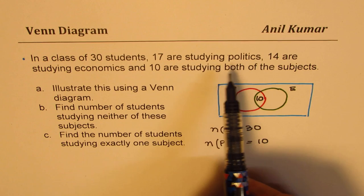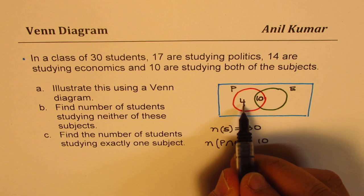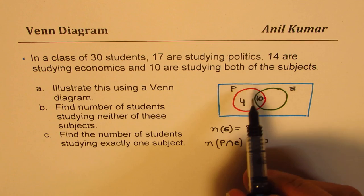10 we have already taken here, right? So those who are studying only politics should be how many? Should be 4, right? Then only you get 4 plus 10 as 14. I hope that part is clear. So 4 plus 10 becomes 14. So that will give you the answer for distribution of politics.